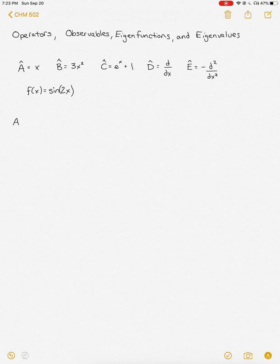If we operate on our function f with operator A, we simply multiply x with sine of 2x and end up with x sine 2x. We can operate with operator B, and it'll be the same thing. We just multiply, and we'll get 3x squared sine 2x.